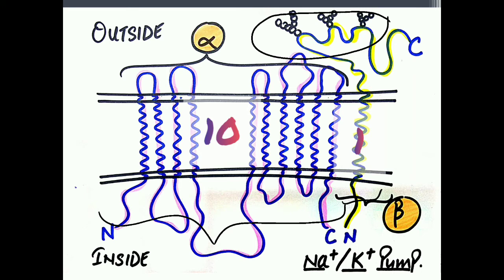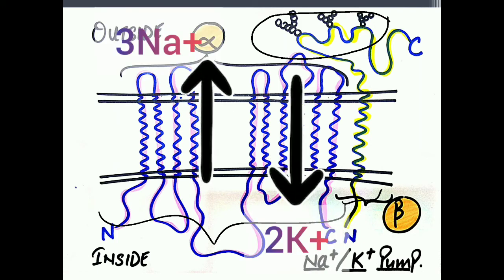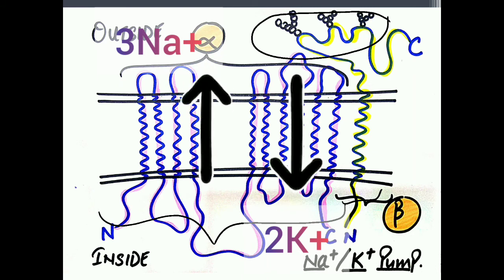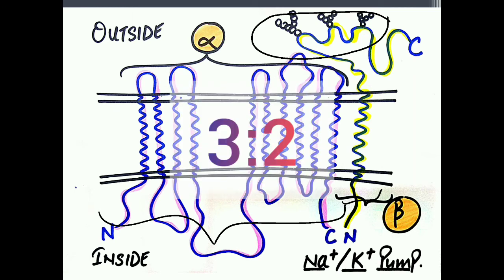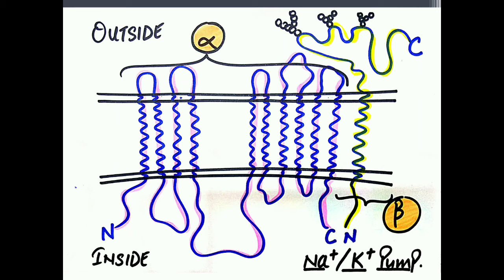This is the structure of the sodium potassium pump. Inside it, there are three binding sites for sodium ions and two binding sites for potassium ions. Each time one ATP is hydrolyzed, three sodium ions will move out of the cell and two potassium ions will move inside the cell. So the sodium to potassium ratio is 3:2. Now let's see how the sodium potassium pump operates.